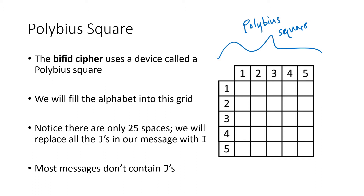You might notice there are only 25 spaces — five rows and five columns, and five times five is 25. So we don't actually have room for our entire alphabet. What we're going to do is cheat a little bit and get rid of the letter J. If our message happens to have any J's in it, we'll just replace those with the letter I. That's how we fit all 26 letters into this grid.